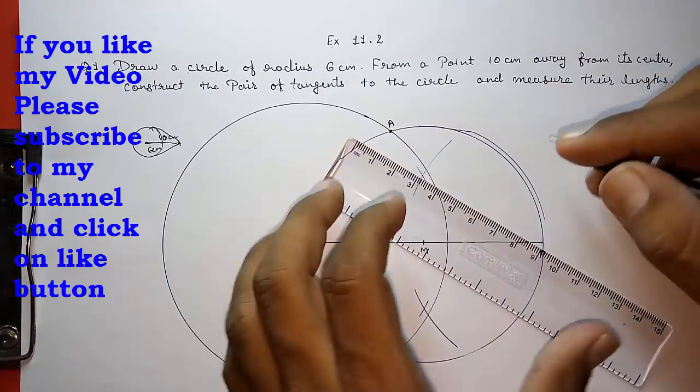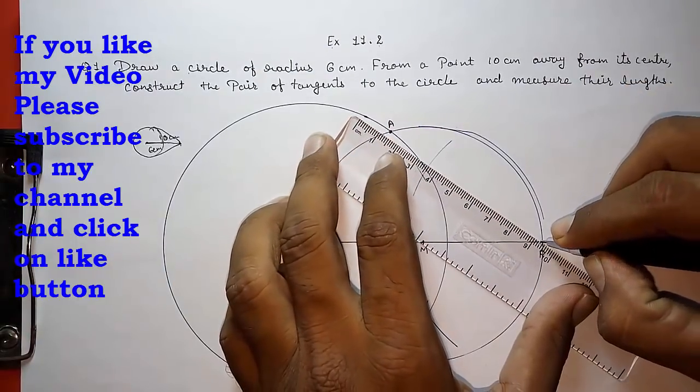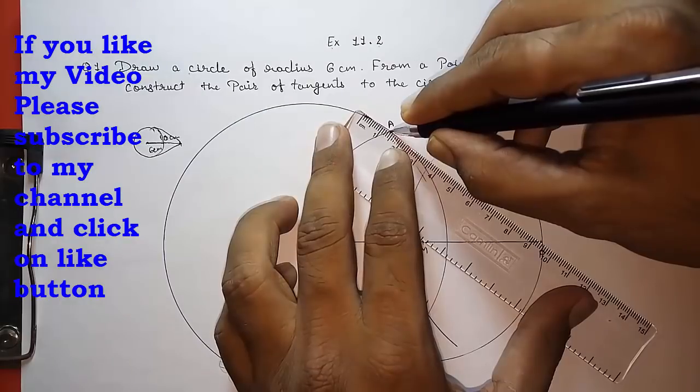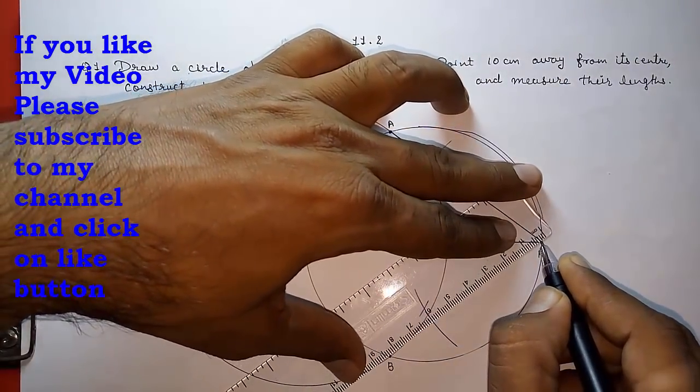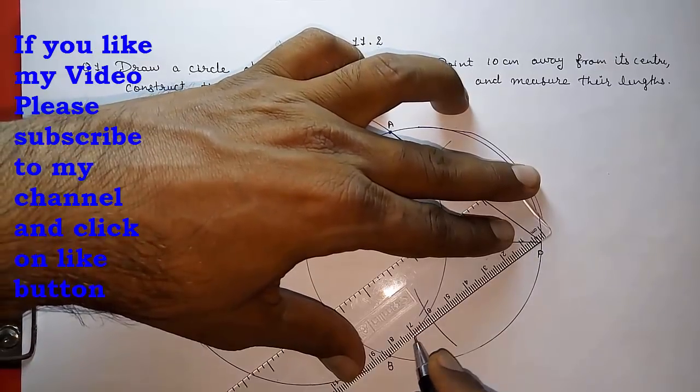Now join PA and PB. These are our two tangents. We have finished our construction.